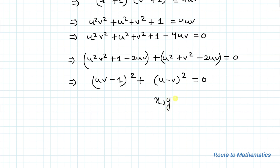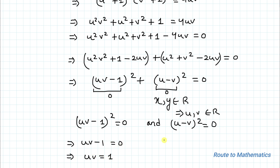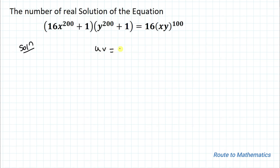Since x and y are real numbers, u and v are also real. The sum of squares of two real numbers equals zero only when each is zero. So (uv − 1)² = 0 gives uv = 1 (equation A), and (u − v)² = 0 gives u = v (equation B).